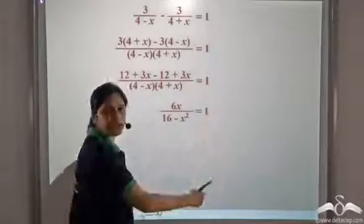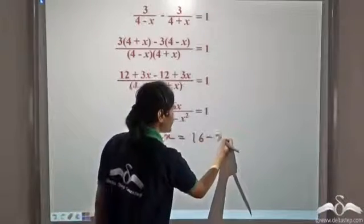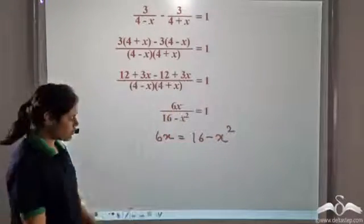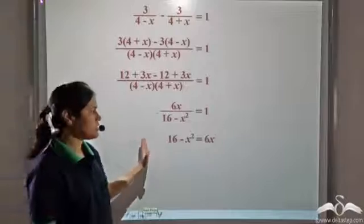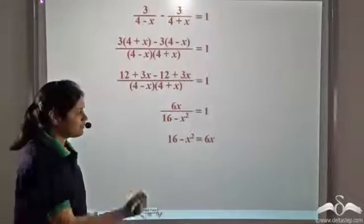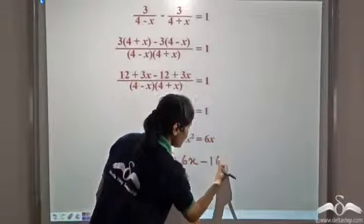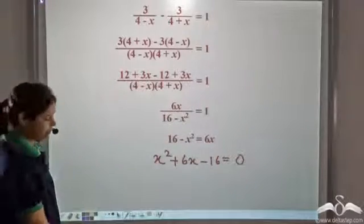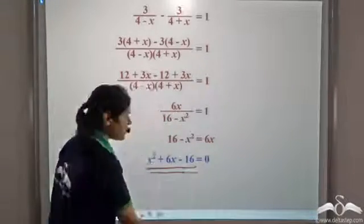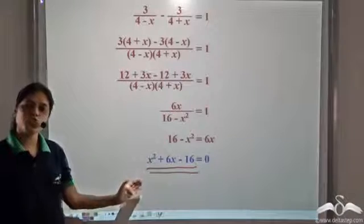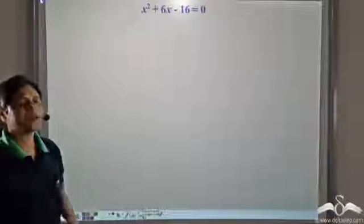So we have 6x divided by (16 minus x squared) equals 1. We can take (16 minus x squared) to the other side, giving us 6x equal to 16 minus x squared. Taking all terms to one side, we get x squared plus 6x minus 16 equal to 0. This is a quadratic equation, and we know how to solve a quadratic equation.